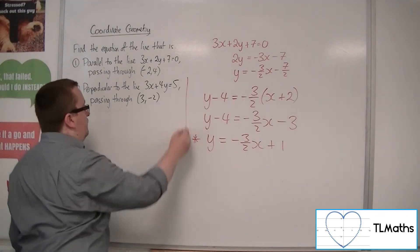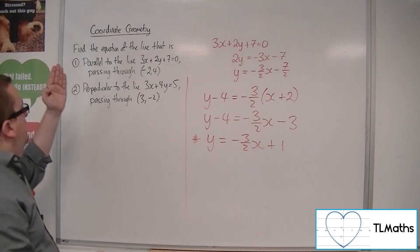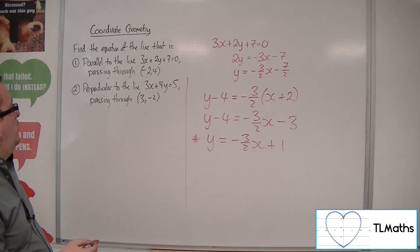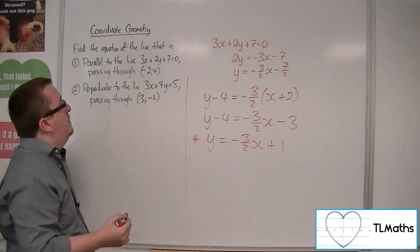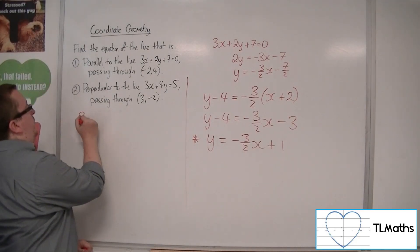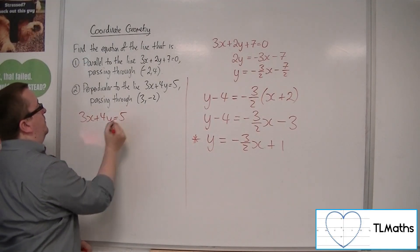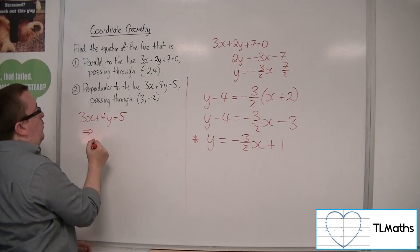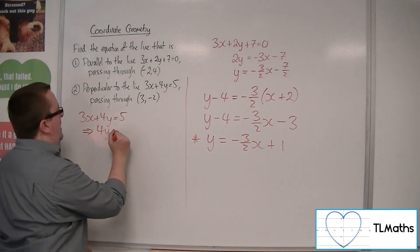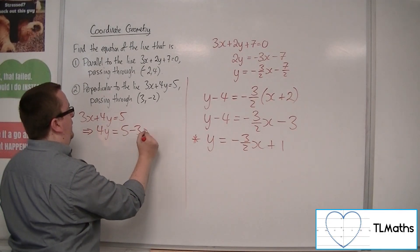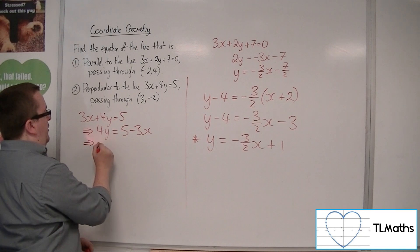So for number 2, because I need a line that's perpendicular to the line 3x plus 4y equals 5, passing through 3 minus 2, if I start off with that 3x plus 4y equals 5, I want to rearrange it to get y equals, so subtract the 3x from both sides, and then divide both sides by 4.